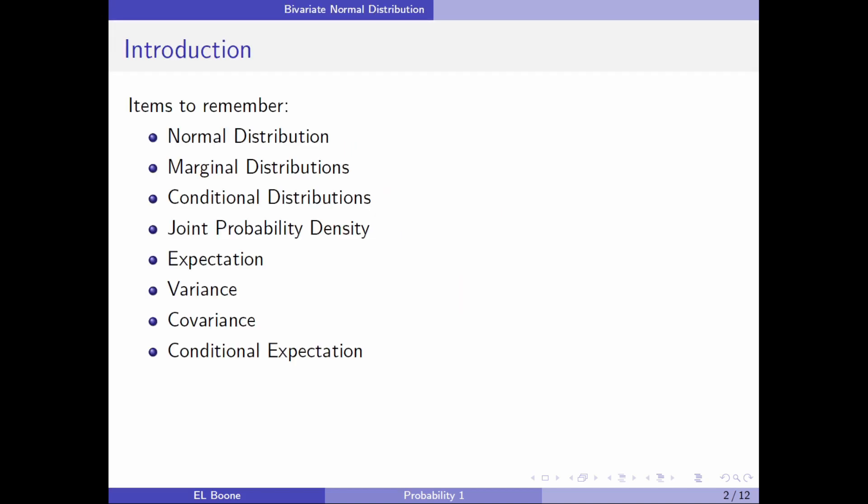Items we're going to need to remember: the normal distribution, marginal distributions, conditional distributions, joint probability density, expectation, variance, covariance, and conditional expectation.